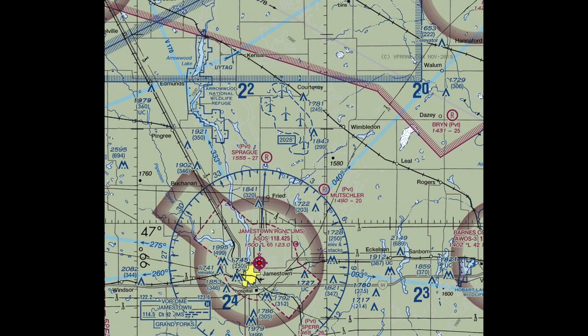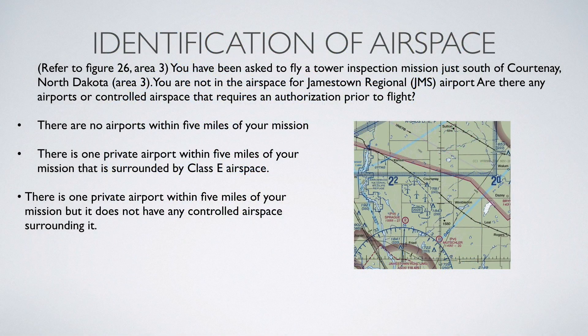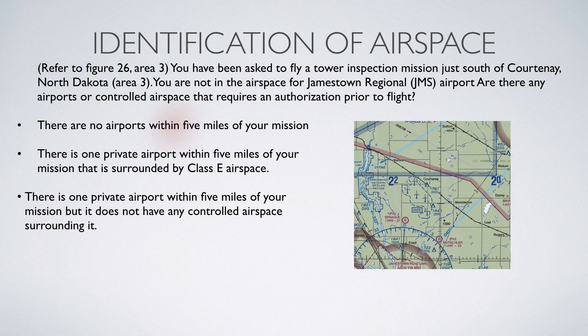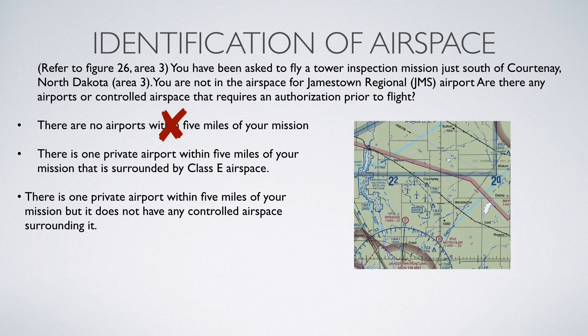So this looks like a private airport, which means that answer A — the first answer — is incorrect, because there is an airport within five miles of Courtenay where we've been hired to inspect the towers.